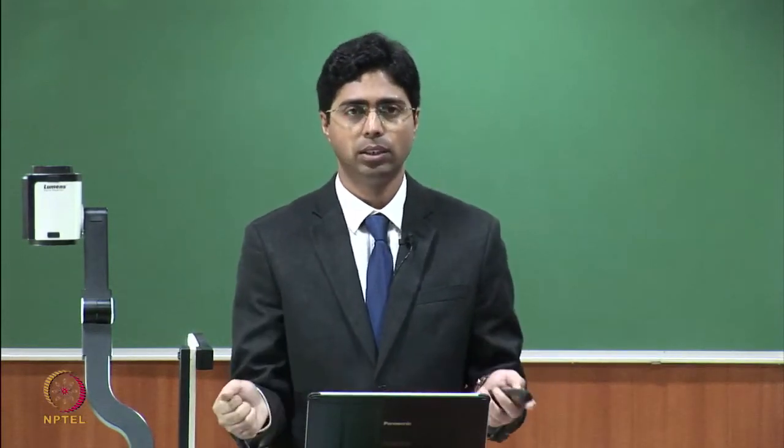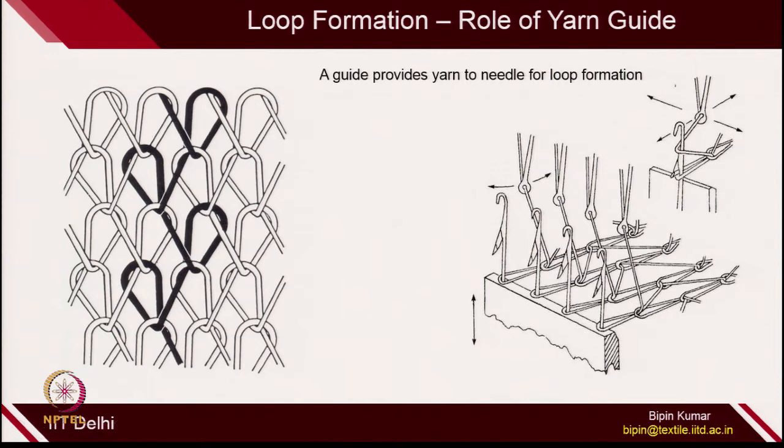More depth clarification on the machine and the fabric will be covered in subsequent lectures. At this moment, just try to understand the structural difference between weft knitted and warp knitted structures. If you try to extend the fabric, you can clearly see that because of the geometry of the loop, the fabric will not be very extensible. Warp knitted structures are very rigid, not so much extensible, because both the legs are on the same side — the loops cannot open up. In terms of fabric properties, these two structures are different.